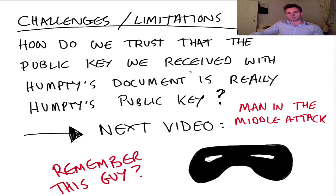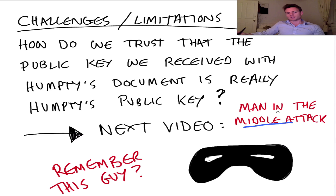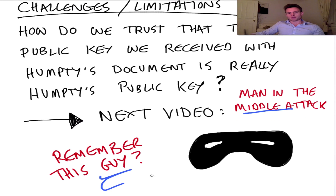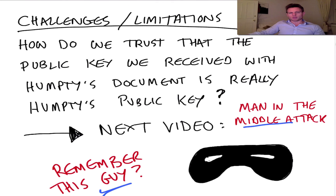The main challenge is: how does the Gingerbread Man know that the public key he's received actually belongs to Humpty Dumpty? Because what can happen is that somebody can intercept this and insert their own public key and send it on to the eventual destination. I'll go into more details in the next video — I'm going to do a specific video on man-in-the-middle attacks. Any questions as usual, please leave them below. If you have any feedback on how you'd like me to do these videos better, feel free to leave that as well. Thank you for watching, see you in the next one.